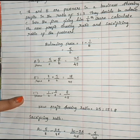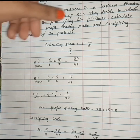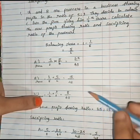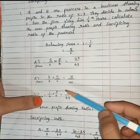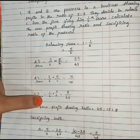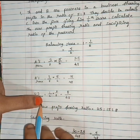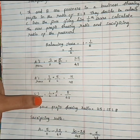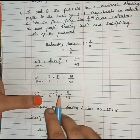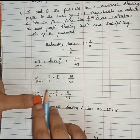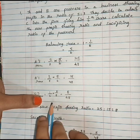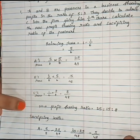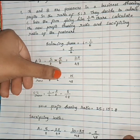C's new share is 1/6. Converting to the same denominator of 48: 1/6 = 8/48. So C's new share is 8/48. Therefore, the new profit sharing ratio is 25:15:8.